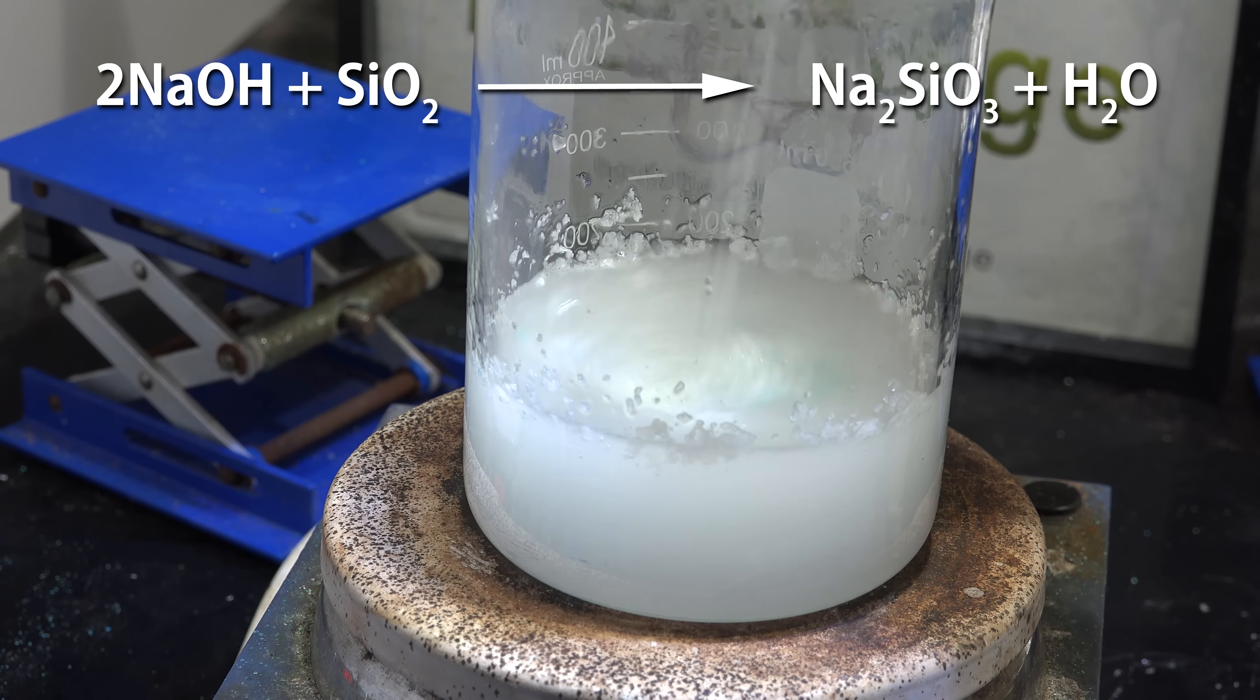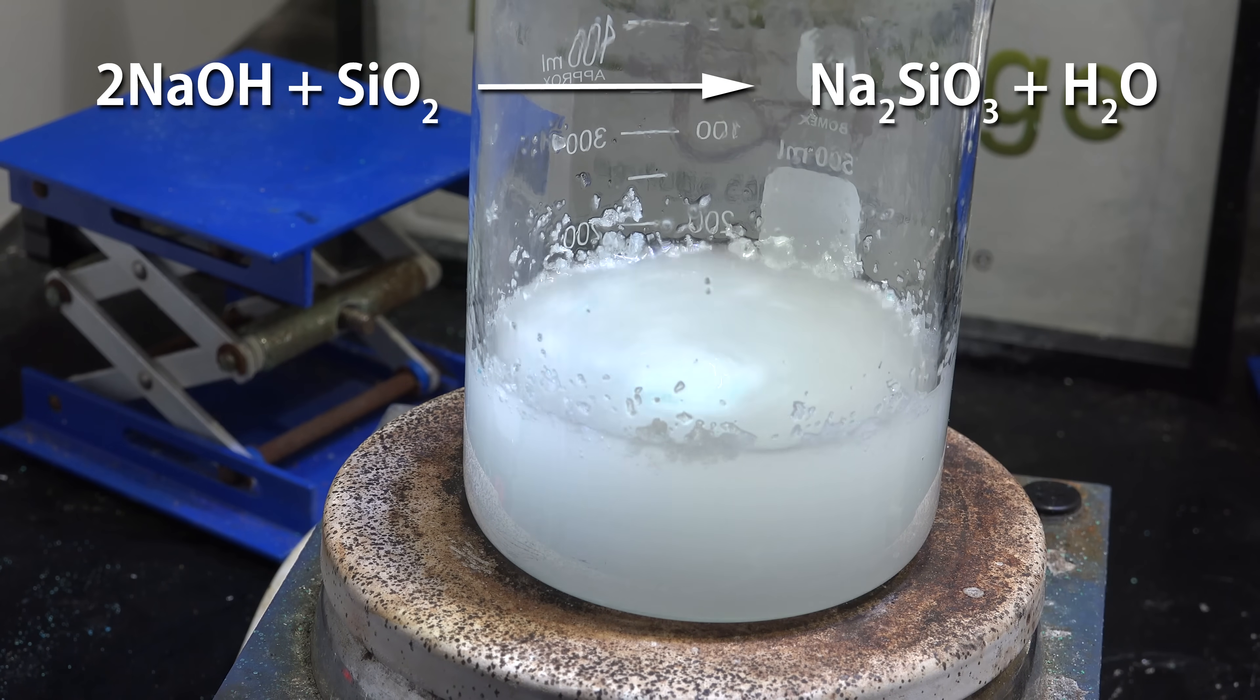Now the ratio I'm using of two moles of sodium hydroxide and one mole of silica produces the classic sodium silicate formula known as sodium metasilicate.